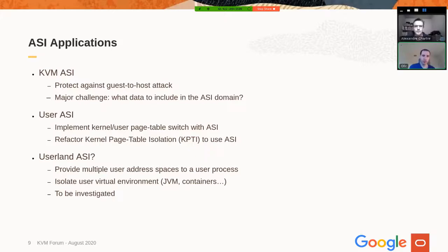Another possibility would be userland ASI. This is an idea we haven't looked into in too much detail yet, but the concept would be to provide a process the ability to have multiple address spaces — multiple page tables — and to switch between them. We think this may have useful applications for virtual environments like the Java virtual machine, the Graal virtual machine, or containers, where a single processor is running multiple environments and you want security between these different environments. This is really something we are only investigating at the moment.